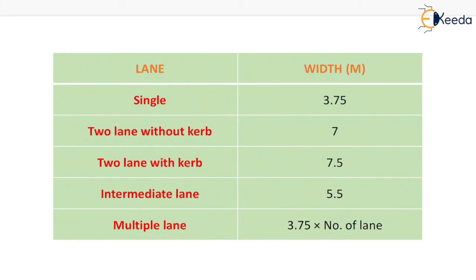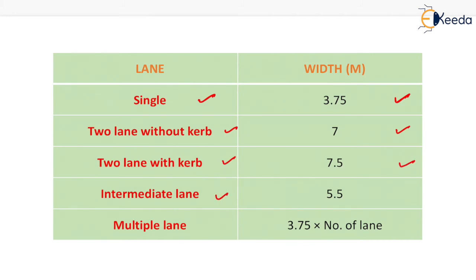In this table, the lane type and the width of the lane in meters are given. For a single-lane road the width is 3.75 meter. For a two-lane road without curb the width is 7 meter. For two-lane with curb the width is 7.5 meter. For intermediate lane the width is 5.5 meter. For multiple lanes, the overall width is 3.75 multiplied by the number of lanes.